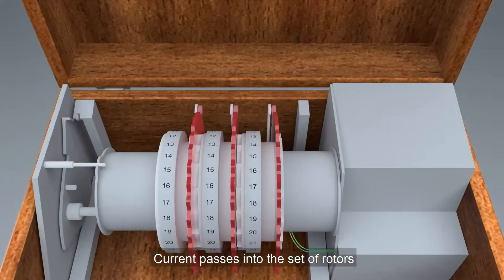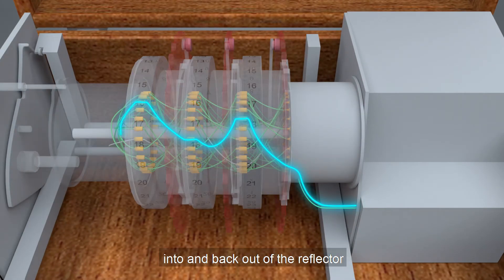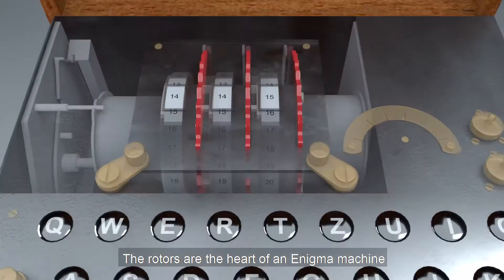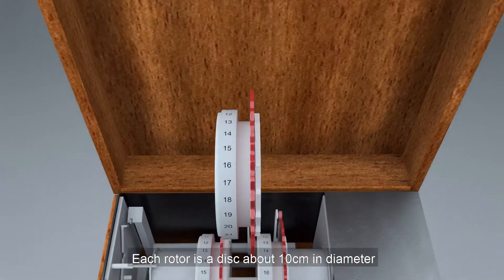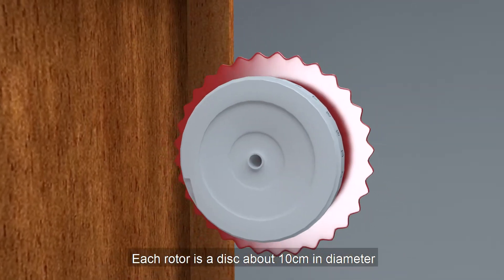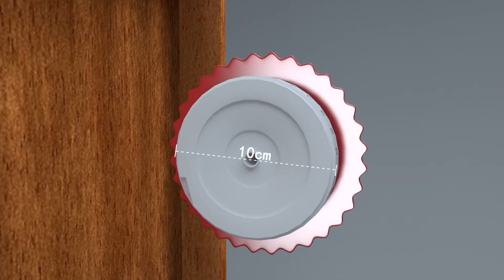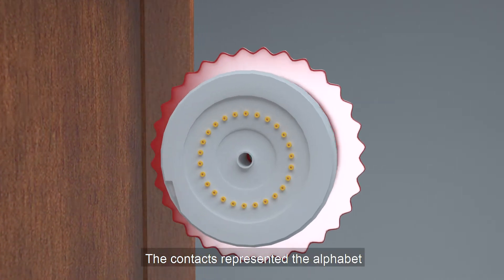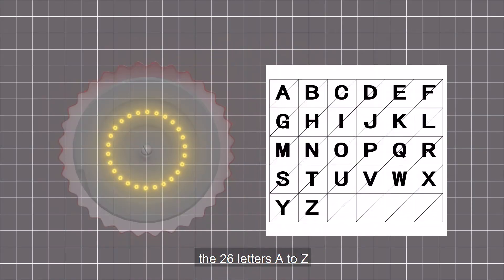Current passes into the set of rotors, into and back out of the reflector, and out through the rotors again. The rotors are the heart of an Enigma machine. Each rotor is a disk about 10 cm in diameter. 26 brass electrical contacts arranged in a circle on each face. The contacts represented the alphabet, the 26 letters A to Z.